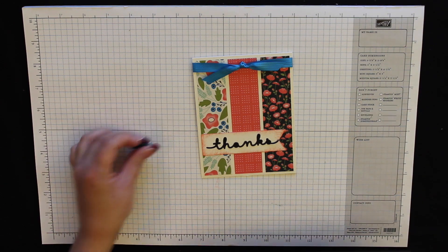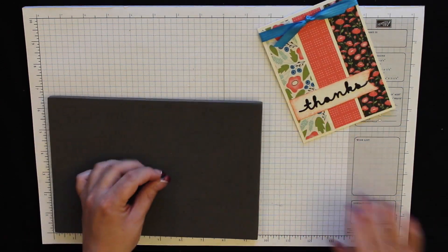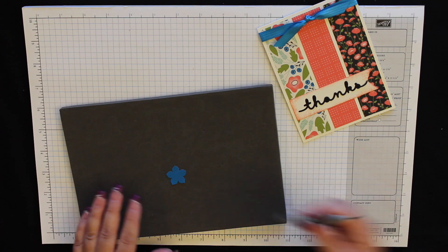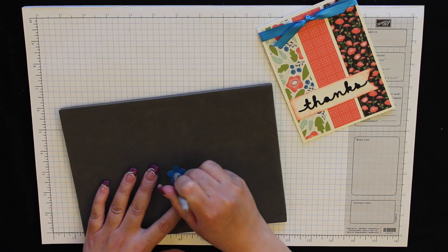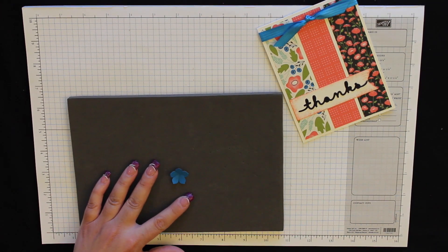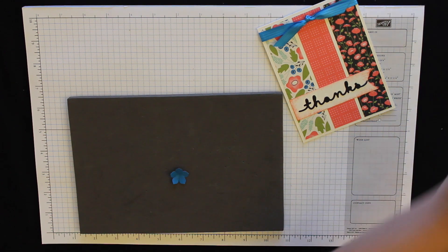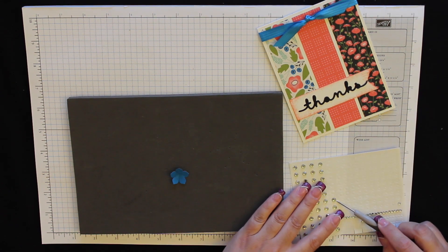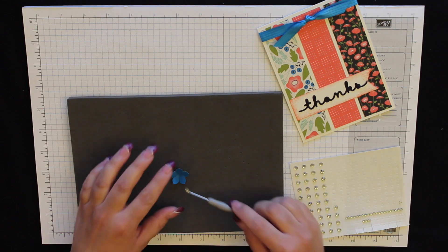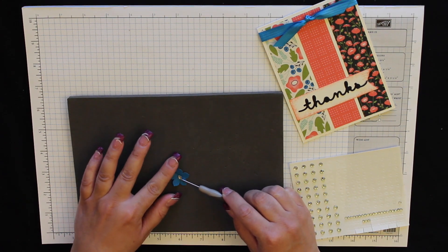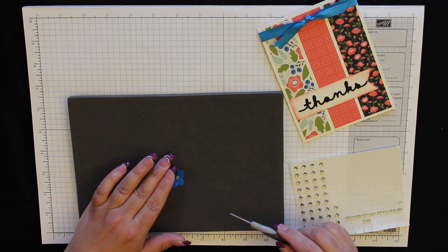I'm going to grab my paper piercing mat and my paper piercing tool, and I'm just going to press the back end down to kind of give that flower some shape. And then I'm going to take one of my rhinestones. I want one of these large rhinestones right here. And I'm going to put that right there in the center.